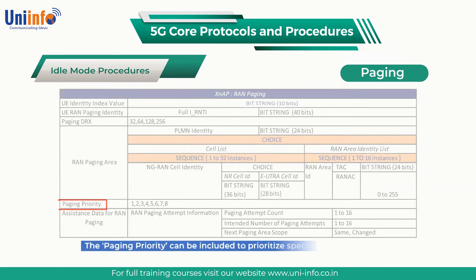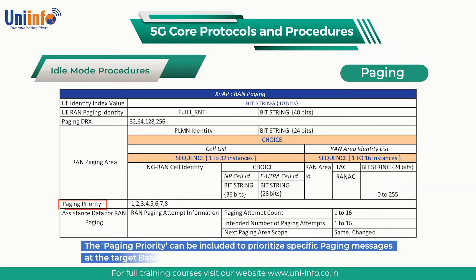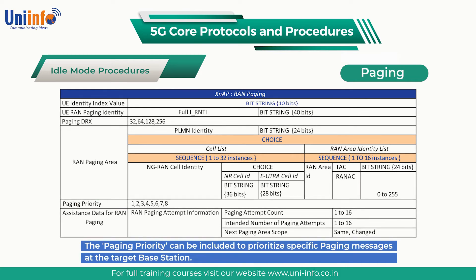The paging priority can be included to prioritize specific paging messages at the target base station. The priority can be configured with a value from 1 to 8, where 1 represents the highest priority.